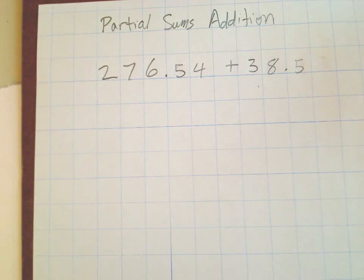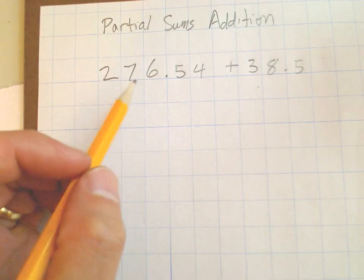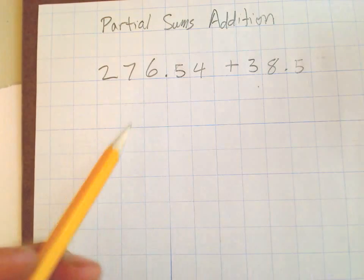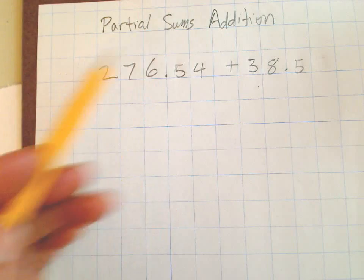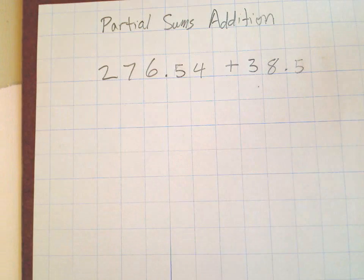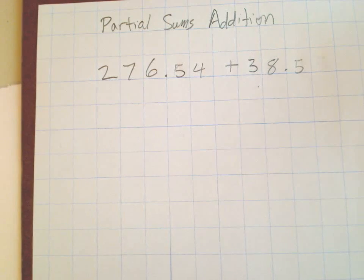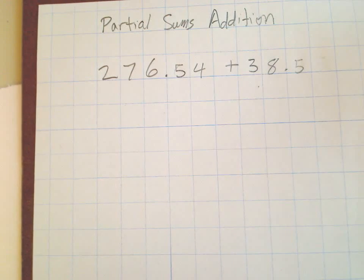So first thing we're going to do is we're going to do a quick magnitude estimate, because I know this is about 280 here and I know that this is about 40. I know that generally it's going to be about 320, that's going to be the sum.